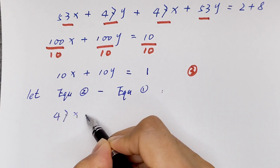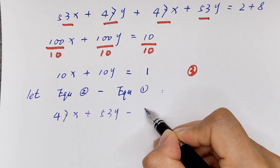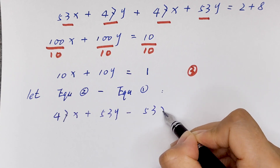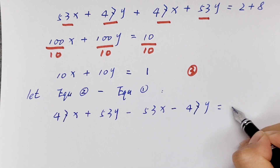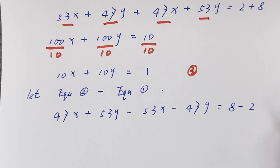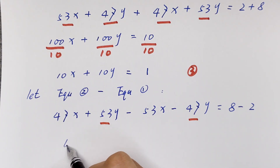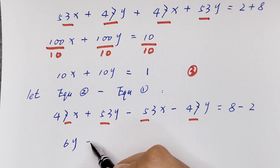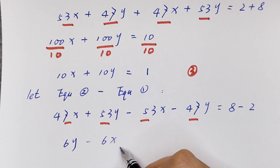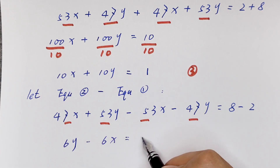47x plus 53y minus 53x minus 47y is equal to 8 minus 2. This minus this equals negative 6x, and this minus this equals 6y, so 6y minus 6x is equal to 6.